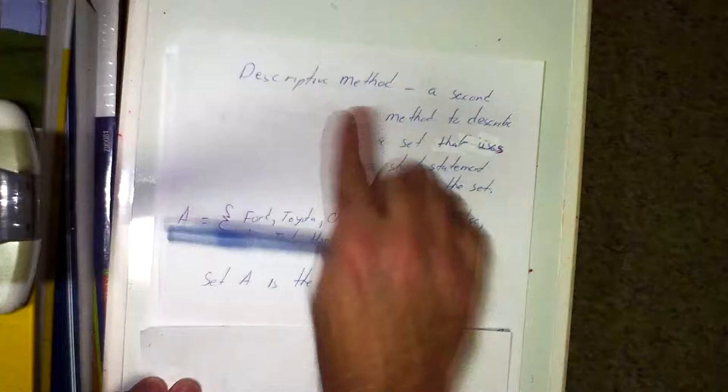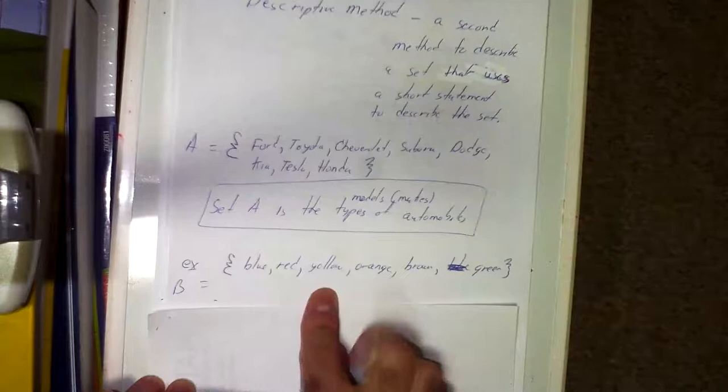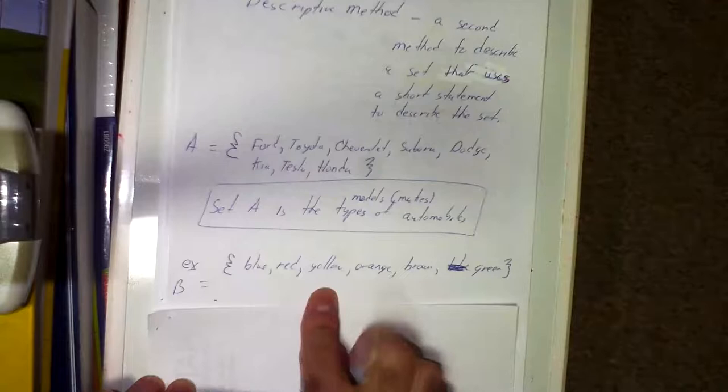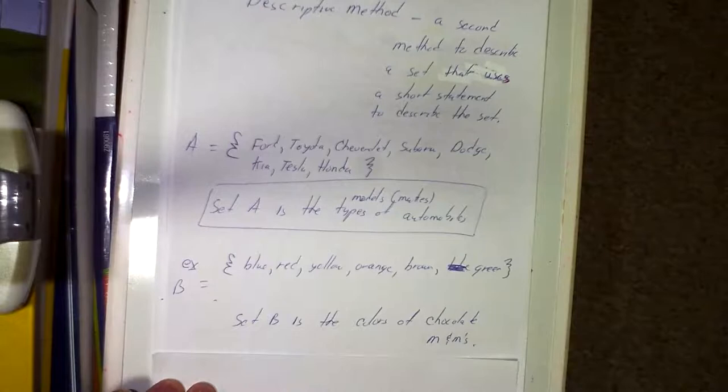Another example: let B equal {blue, red, yellow, orange, brown, green}. What are we describing? Set B is the set of colors of chocolate M&Ms — not Skittles, because I don't think Skittles has blue. So we use words to describe the set.